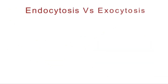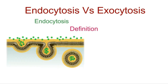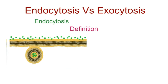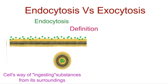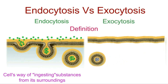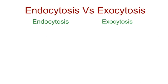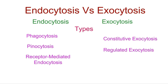Let's take a closer look at the fundamental distinctions that set endocytosis and exocytosis apart. Endocytosis is all about bringing stuff into the cell — it's the cell's way of ingesting substances from its surroundings. Exocytosis, on the other hand, is all about exporting substances out of the cell. There are different types of endocytosis — phagocytosis, pinocytosis, and receptor-mediated endocytosis — while exocytosis has two main types: constitutive exocytosis and regulated exocytosis.